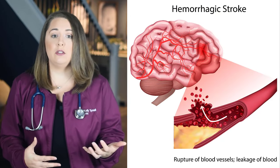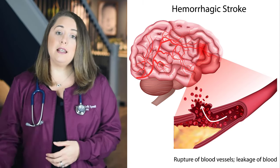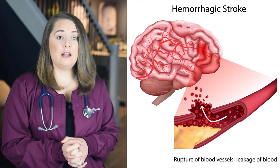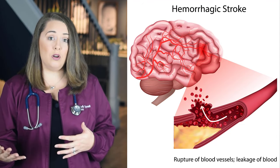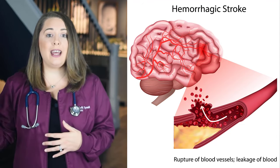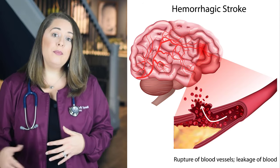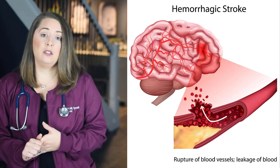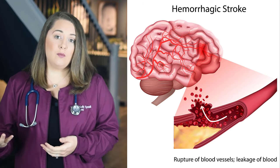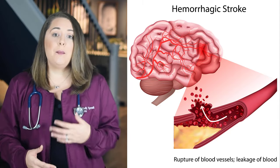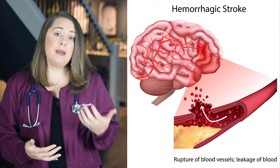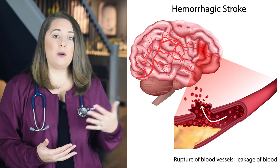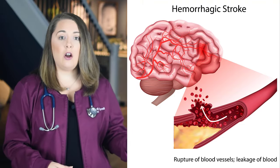The other way blood supply to the brain can be interrupted is by a leaking or ruptured blood vessel, which is referred to as a hemorrhagic stroke. These types of strokes are commonly seen in patients who have chronically high blood pressure, because over time that pressure against the artery walls causes damage and thins out those arteries, which can cause a small hole or a bulging in the artery, known as an aneurysm. When that aneurysm ruptures, patients will have a hemorrhagic stroke. Patients can also experience a hemorrhagic stroke from forceful trauma to the brain.